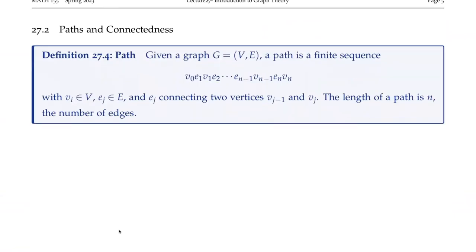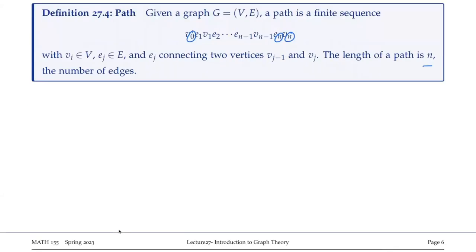We can now start to think about paths and what it means for vertices to be connected. A path is defined to be a finite sequence — one that has a limited number of edges and vertices. We start at V0, our first vertex, follow an edge E1 to V1, follow another edge E2 to V2, and so on. It's just describing how you are moving through a particular graph. Because there are n edges here, that means we have a path of length n, which equals the number of edges.